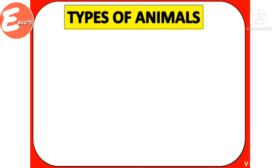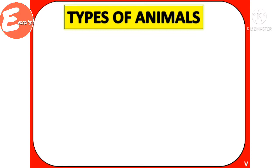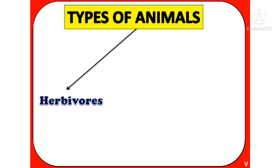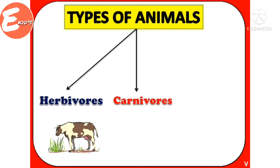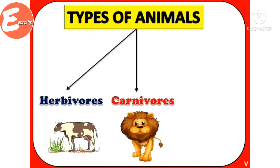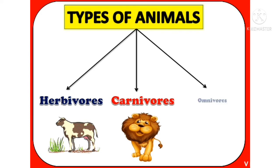Hello dear students. In this video we will learn different types of animals. Let's see one by one. Herbivores, carnivores, omnivores.